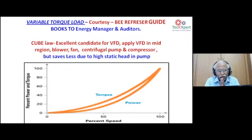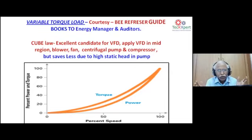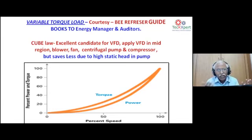Acknowledging the Bureau of Energy Efficiency's refresher guide and course materials for energy managers and auditors — excellent content that we've been able to revisit during COVID time. We follow the cube law, which is an excellent principle for variable torque loads. Industries have two types: constant torque loads (productive machines, ~8 out of 10) and variable torque loads (utilities — centrifugal compressors, pumps, blowers, fans). The difference between a fan and blower is only in the pressure: below ~1000 pascals is called a fan; above ~2000 pascals is a blower.